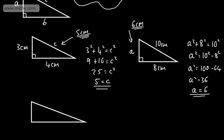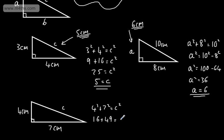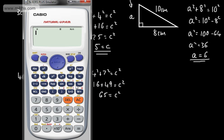Let's do another one and find a missing length. This time let's say one side is 4 centimetres and the other is 7 centimetres. Here is the right angle, and we want to find length C — so we're finding the hypotenuse. A squared (4 squared) plus B squared (7 squared) equals C squared. That gives 16 plus 49 equals C squared, so 65 equals C squared. We'll use a calculator to take the square root of 65.